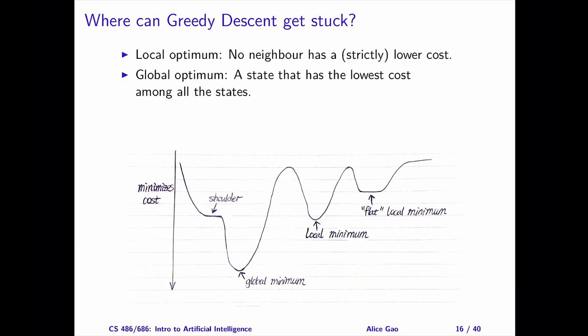To understand this property, let's define global and local optimals more formally. The global optimum is a state that has the lowest cost among all of the states in the search space. A local optimum is a state where no neighbor has a strictly lower cost than the current state. In other words, a global optimum is the best state in the entire search space, whereas a local optimum is the best state in the local neighborhood.